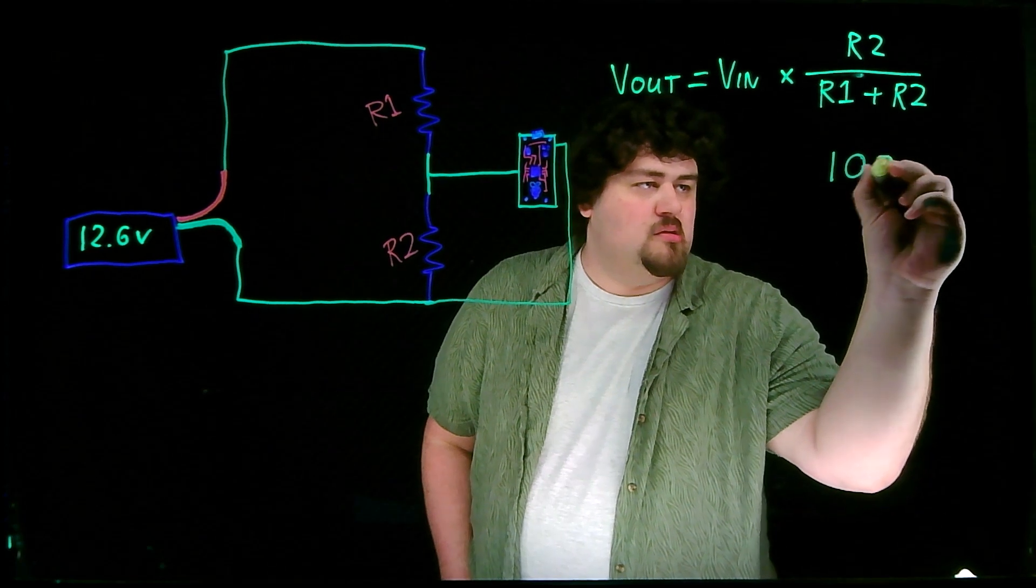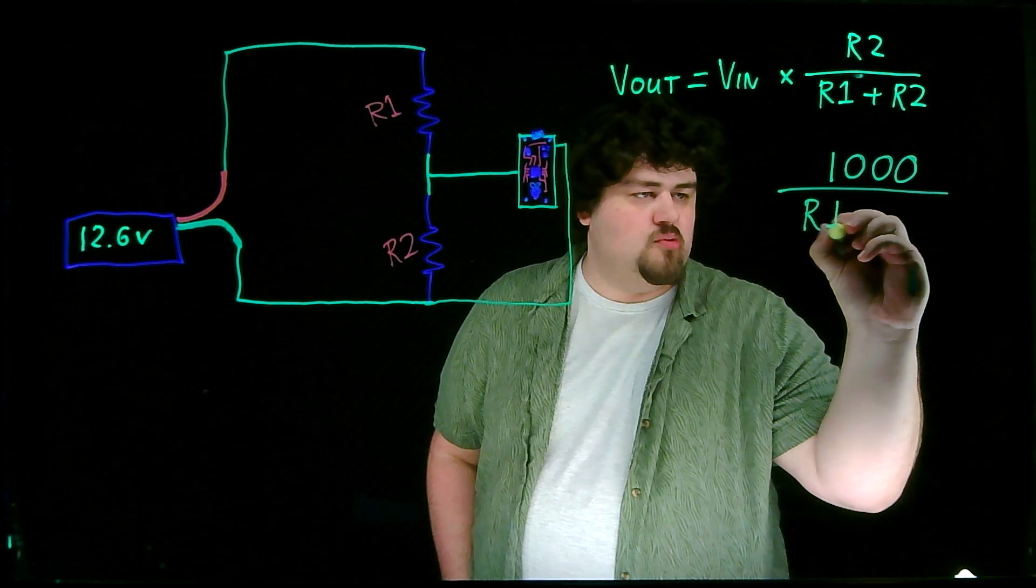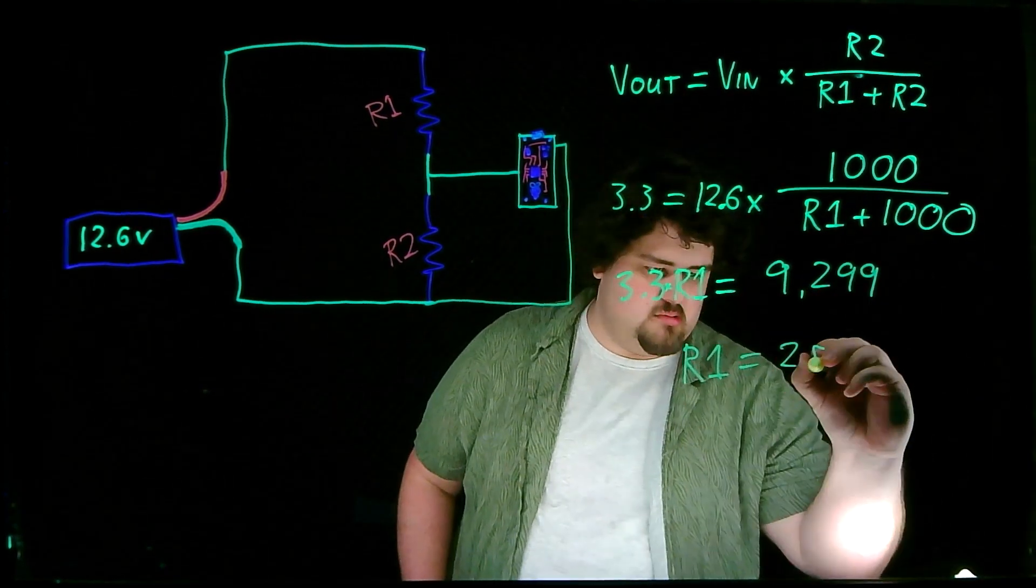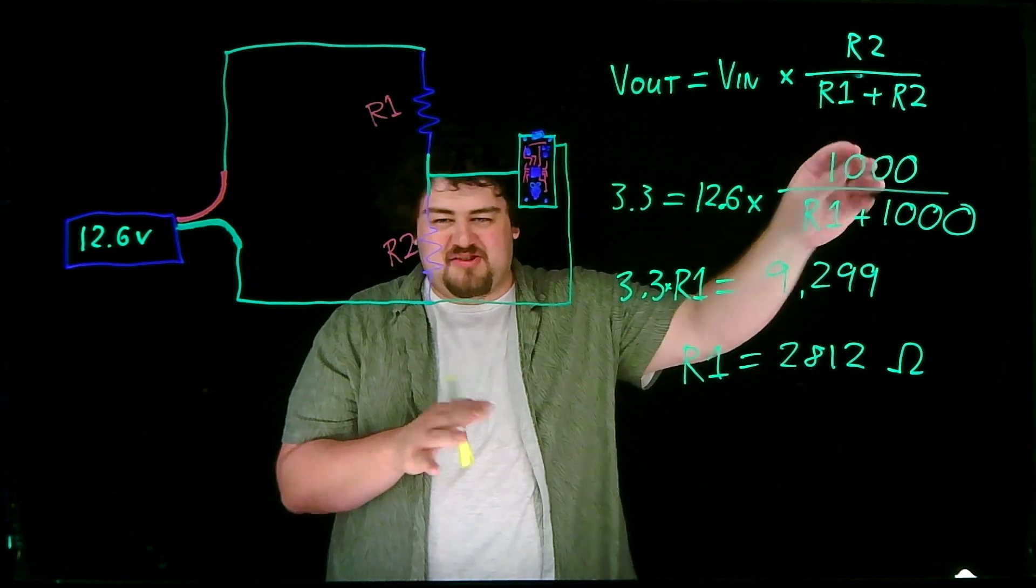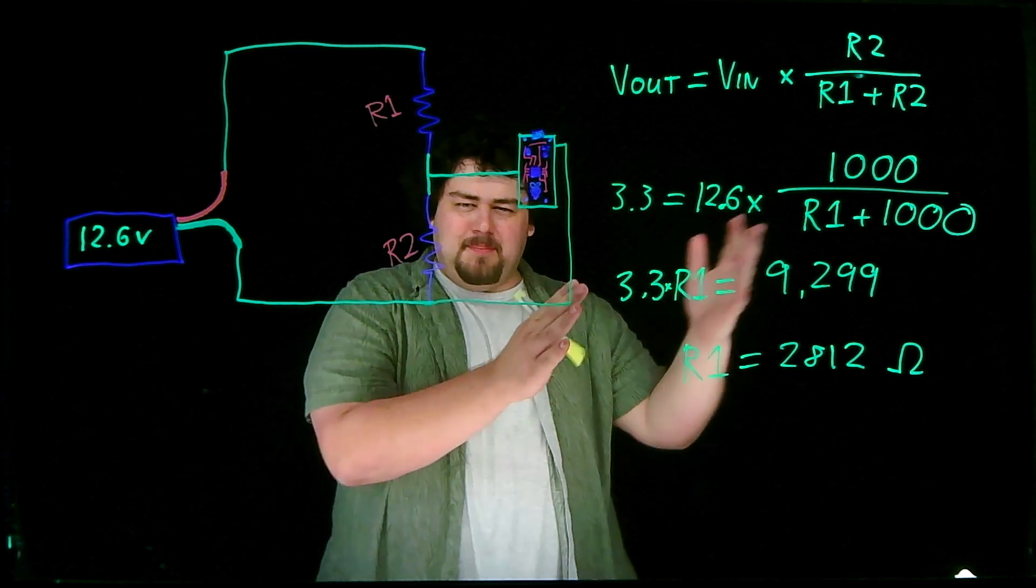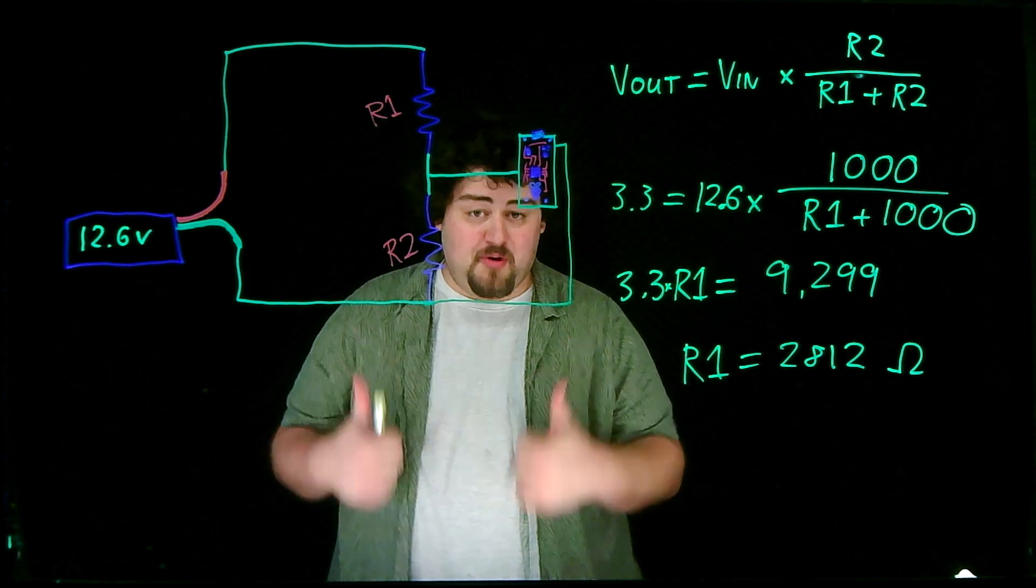With our equation, let's randomly pick a value for R2 to be equal to 1000, and I'm just going to go ahead and solve this equation. After arbitrarily picking R2 as 1000, we find that R1 is 2812, and both of these resistor values are in the 1 to 10,000 range, so these are probably going to work.